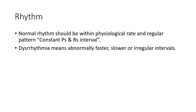We calculate rhythm before rate because for a normal rhythm, rate calculation is easy — just count large boxes between two R waves and divide by 300. But if the rhythm is abnormal, counting heart rate is more difficult. Normal rhythm should have a physiological rate, regular pattern, and constant P and R intervals. Arrhythmia means an abnormally fast, slow, or irregular interval.